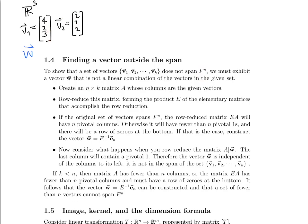So we now have a 3 by 2 matrix A whose columns are the given vectors — here's the first column, here's the second column. The next step is to row reduce this matrix and form the product E of the elementary matrices that accomplish the row reduction.